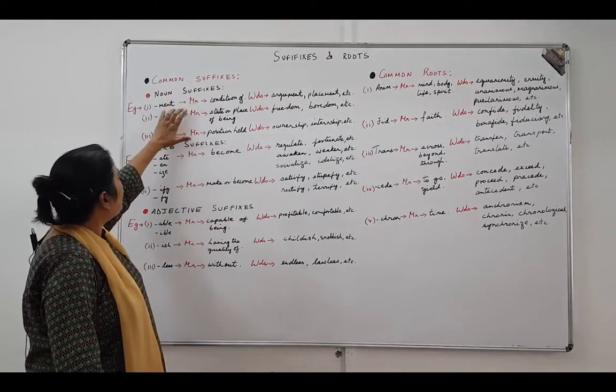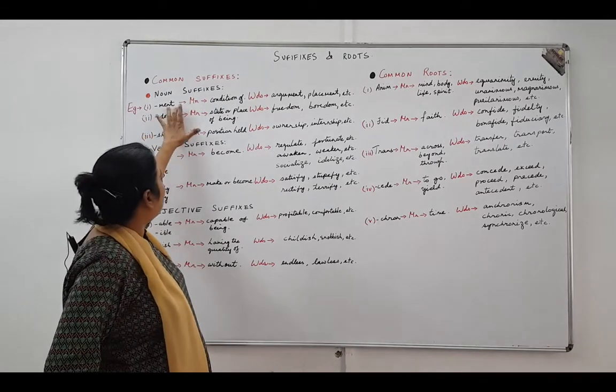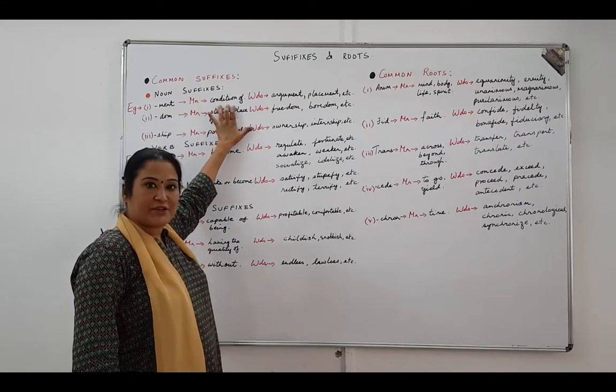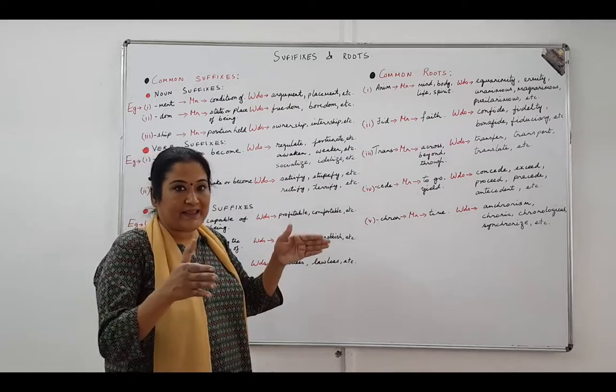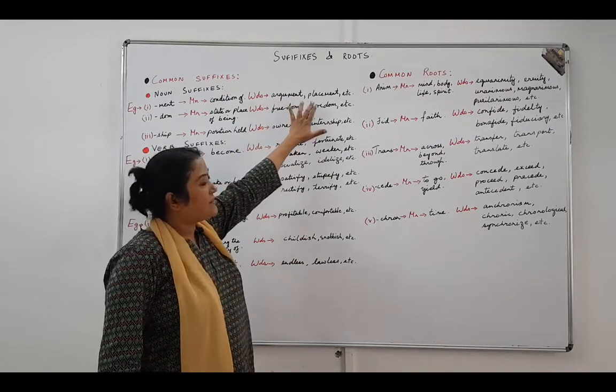For the noun suffix, the common ones are when it ends in m-e-n-t, ment. The meaning of ment as a suffix is condition of. So the words that we get are speaking about the condition of being in that state. Examples: argument, placement.